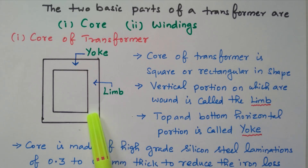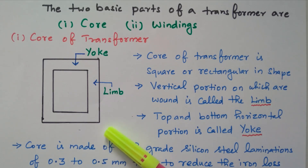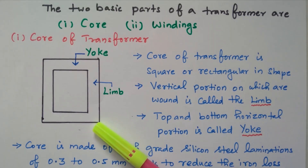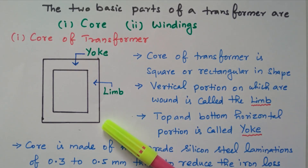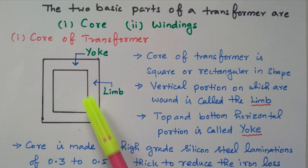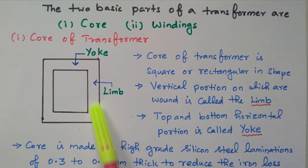Both yoke and limb are joined together to form either a square or rectangular frame. It is a laminated iron core — not a single piece, but made of n number of thin sheets compressed together. All the thin sheets are laminated, with no contact between each sheet, so they are highly laminated. Both the horizontal and vertical parts are joined together to form either the square or rectangular form.